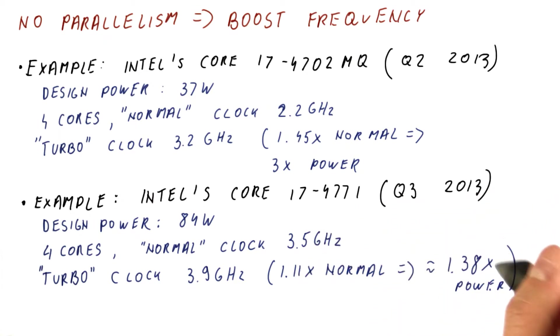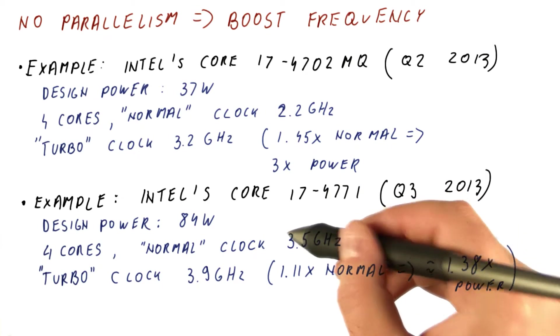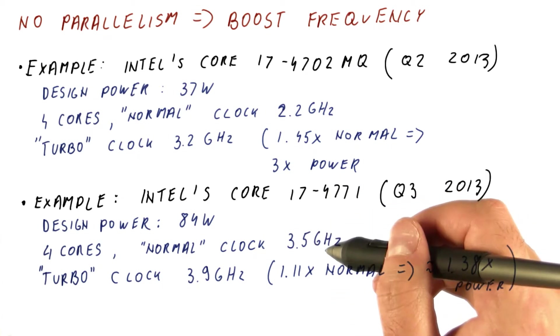And if we assume that the power is cubically growing with frequency, that means it's only spending 1.38 times the power of a core when working with three other cores. Why is it like that?